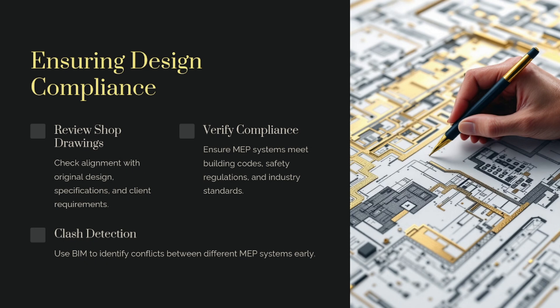The next one is clash detection. Basically, there is BIM software available, but you don't need to know BIM — if you know AutoCAD, that is sufficient. In BIM, you see everything in 3D view so you can check very clearly to find any clashes. BIM software is advanced, but if you have access to it, that is very good. If you don't, it's not a big issue — you can still use AutoCAD knowledge to check the drawings easily.